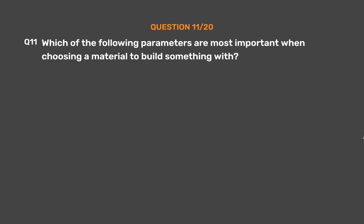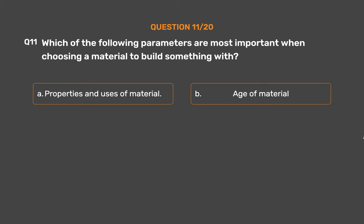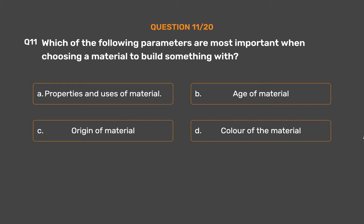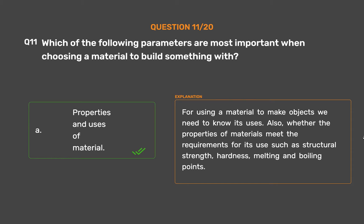Question number 11. Which of the following parameters are most important when choosing a material to build something with? Option A: Properties and uses of material. Option B: Age of material. Option C: Origin of material. Option D: Color of the material. The correct answer is Option A, properties and uses of material. For using a material to make objects, we need to know its uses and whether the properties of the material meet the requirements, such as structural strength, hardness, and melting and boiling points.